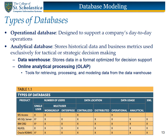The most popular way of classifying databases today is based on data usage and the time sensitivity of the information gathered from them. Operational databases — also known as Online Transaction Processing or OLTP, Transactional, or Production databases — are designed to support a company's day-to-day operations. In contrast, analytical databases store historical data and business metrics used exclusively for tactical or strategic decision-making, comprising two main components: a data warehouse and an online analytical processing, or OLAP, front-end. The data warehouse stores data in a format optimized for decision support, while OLAP provides tools for retrieving, processing, and modeling data from the data warehouse.